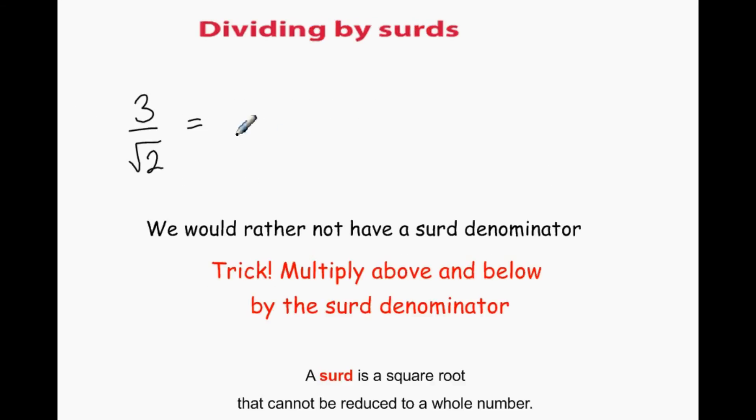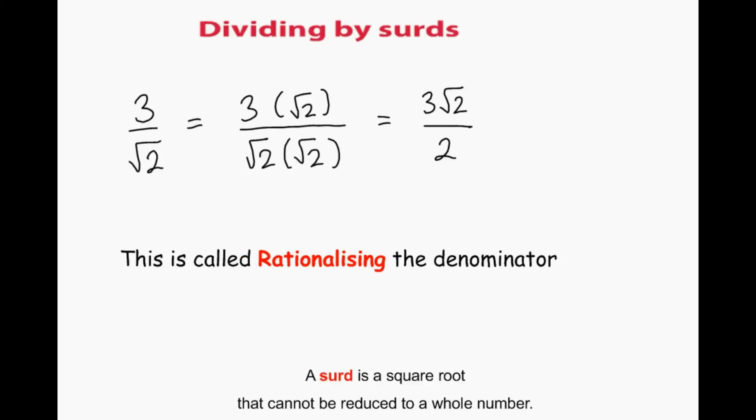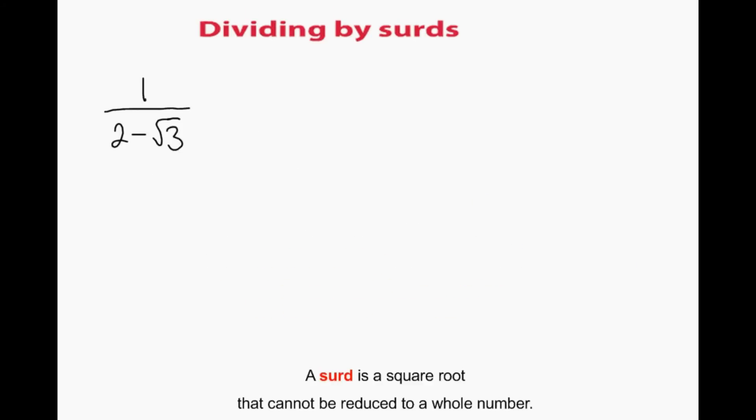When dividing by surds, we don't like to have a surd in the denominator. So we multiply above and below by the surd in the denominator, which is effectively multiplying by 1. It's called rationalizing the denominator.